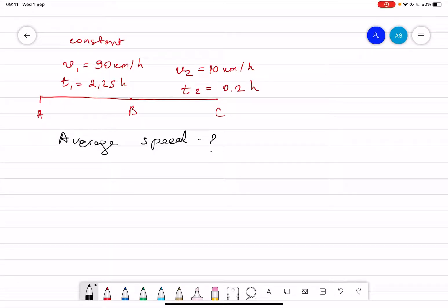Here we have a problem related to a traveling car. A car traveled 2.25 hours at 90 kilometers per hour, and then half of the road he traveled 0.2 hours at 10 kilometers per hour. What was the car's average speed over the entire trip?